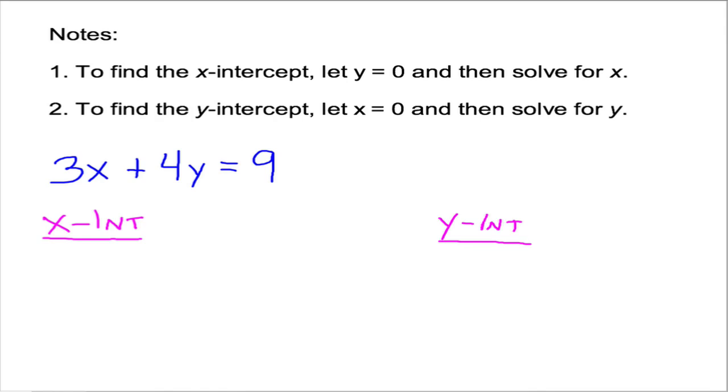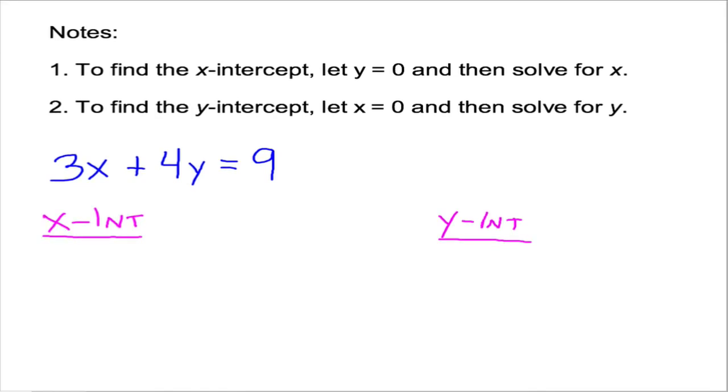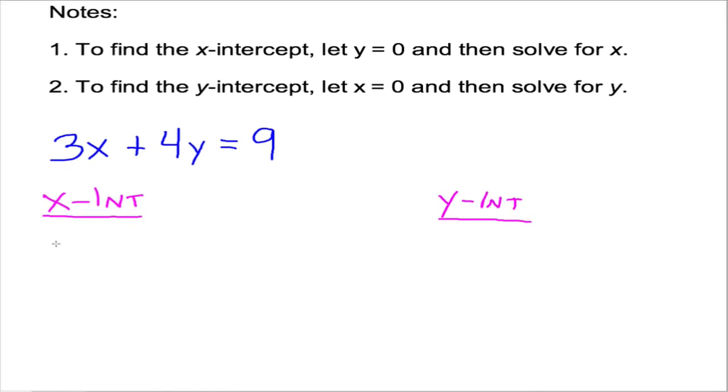So for an example, 3x plus 4y is equal to 9. All right, so to find the x-intercept, I've got a little more room here. To find the x-intercept, let y equal 0. So literally, plug 0 in for y. We know y has to be 0, it has no choice. So 3x plus 4 times 0 is equal to 9. And then you solve this equation for x. Well, 4 times 0 obviously is 0, that just goes away. So you're left with 3x equals 9. 3x equals 9, which means x is equal to 3.